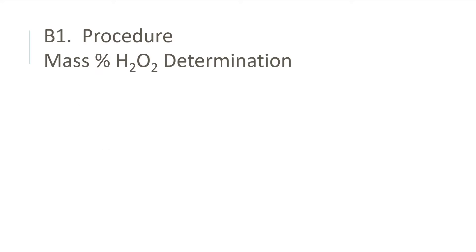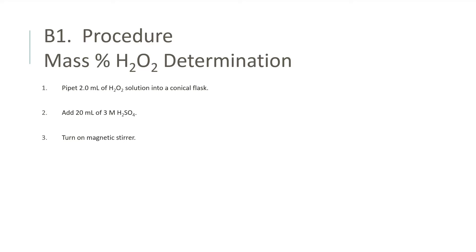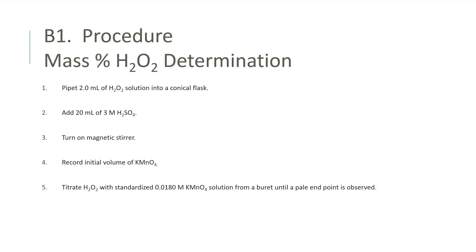B1: Procedure — Mass Percent of Hydrogen Peroxide Determination. First, pipette 2 milliliters of the hydrogen peroxide solution using a volumetric pipette into a conical flask. Then add approximately 20 milliliters of 3 molar sulfuric acid and turn on the magnetic stirrer. Before beginning the titration, record the initial volume of the potassium permanganate solution in the burette. Then titrate the hydrogen peroxide solution with the standardized 0.018 molar potassium permanganate solution from a burette until a pale pink endpoint is observed.